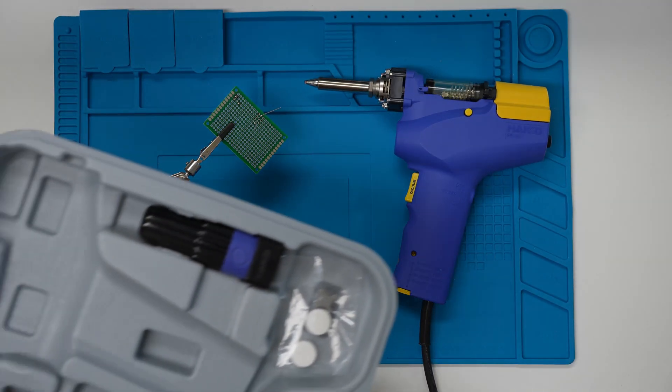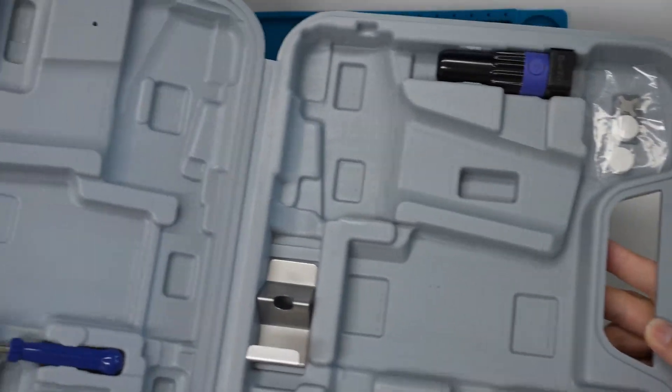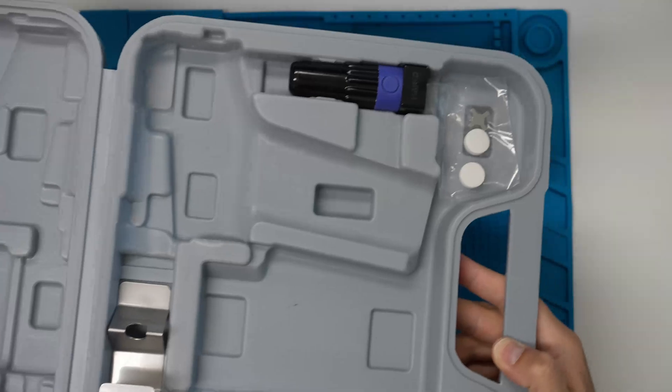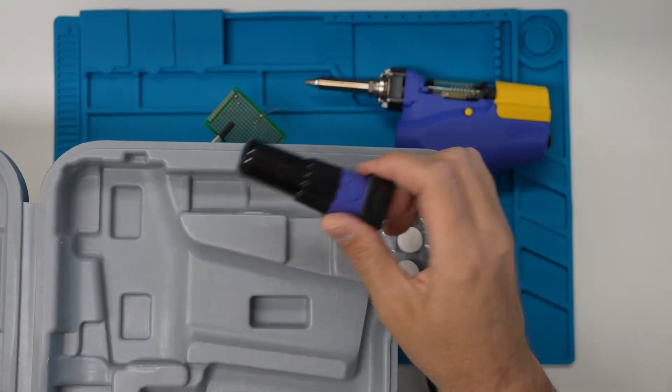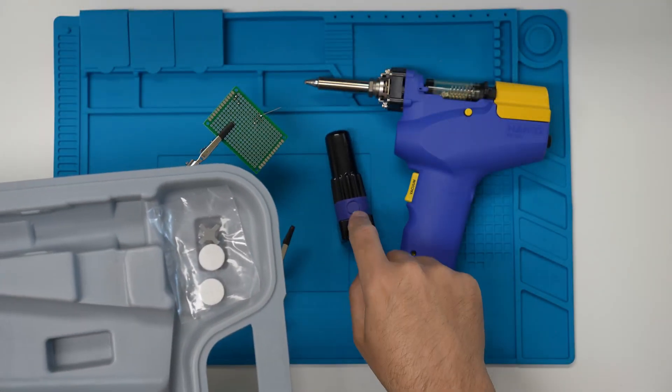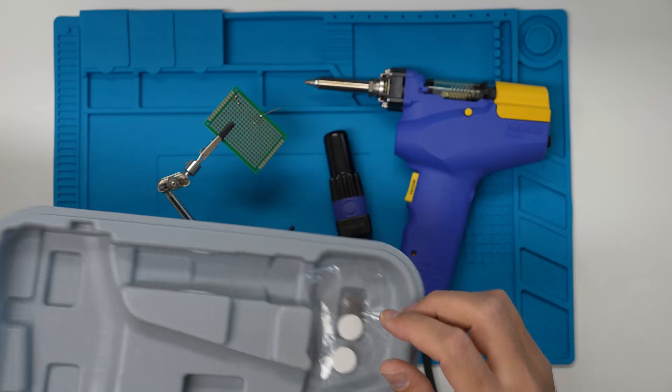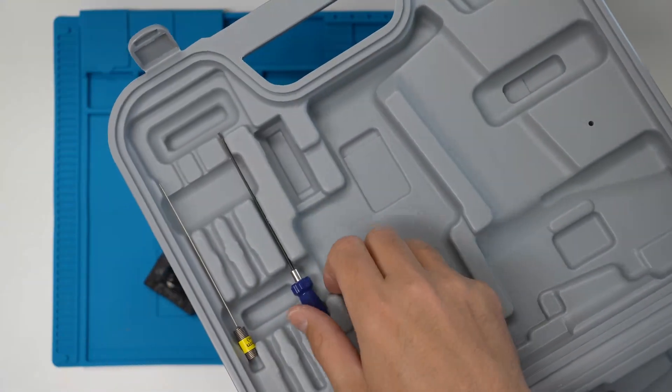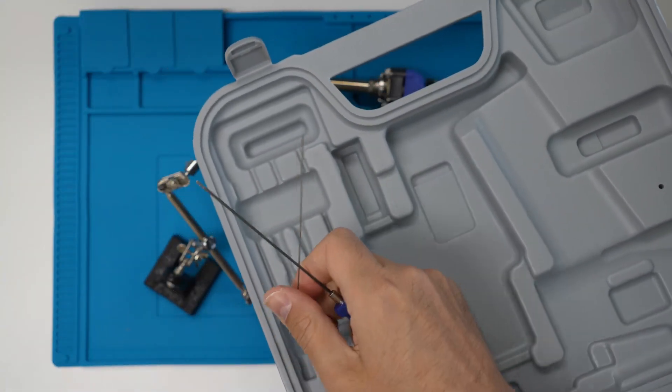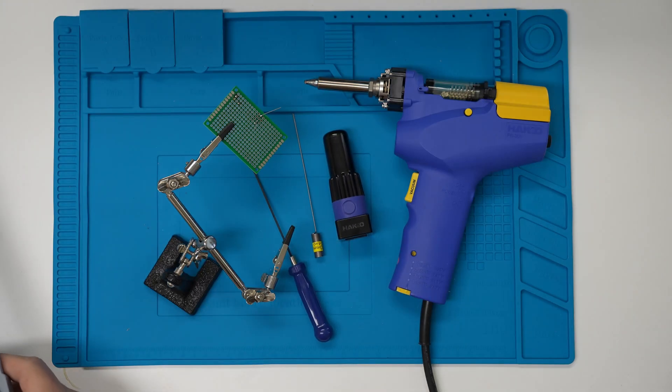Now my Hakko came with this bag and in it we have some extra stuff that we need. So we're going to need this one to remove the tip, and then we're going to need the screwdriver and this cleaning tool. So let's get them out of the bag.